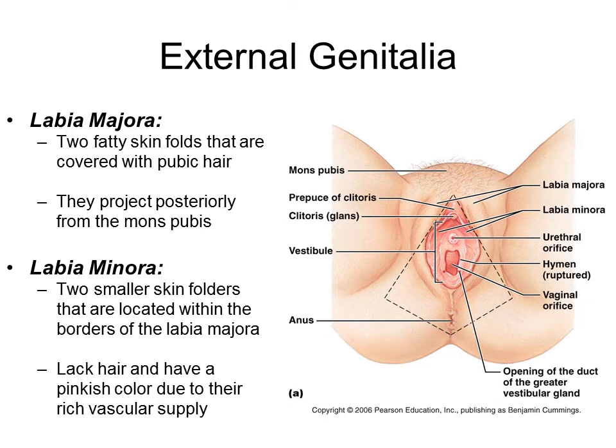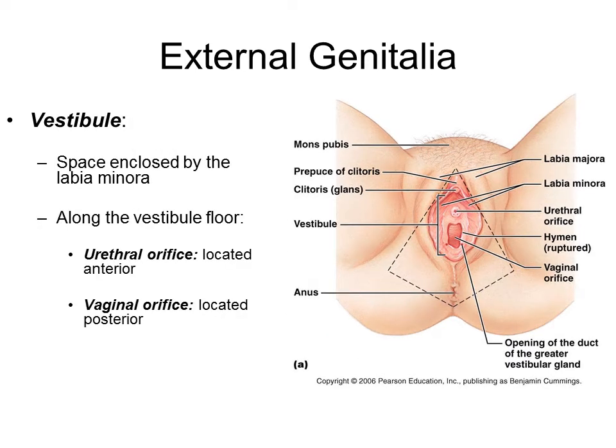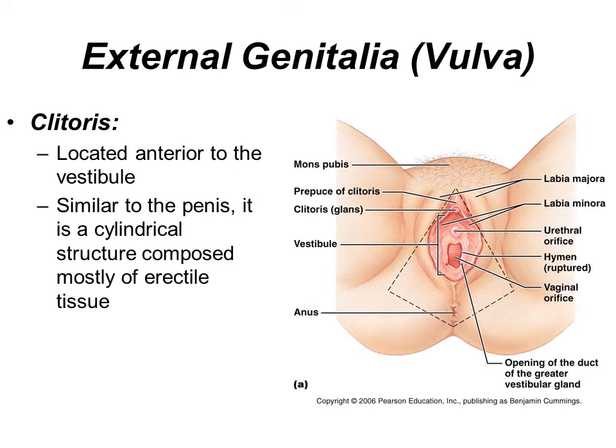The labia minora is not covered with hair and tends to have a pinkish color due to its rich blood supply. The vestibule area contains both the urethral orifice — the urethral opening from the urinary bladder — and behind that the vaginal orifice. The clitoris is anterior, or in front of the vestibule, and is the female equivalent of the penis because it is composed of erectile tissue.